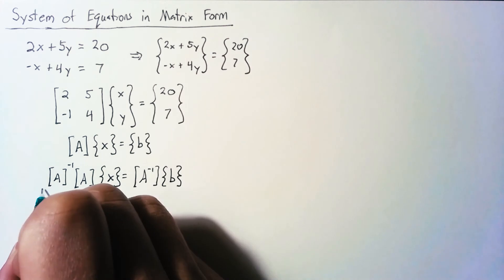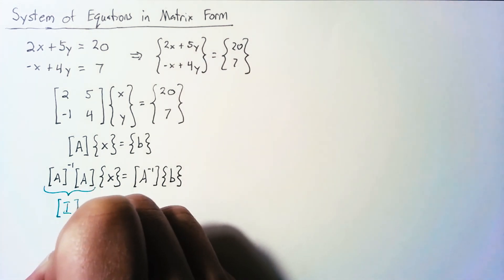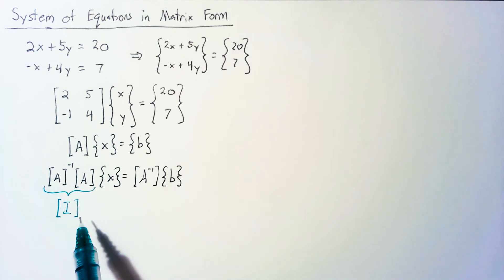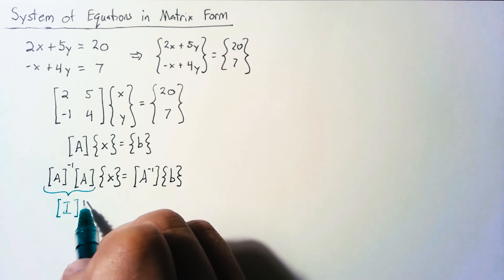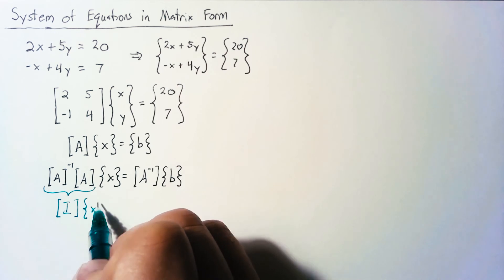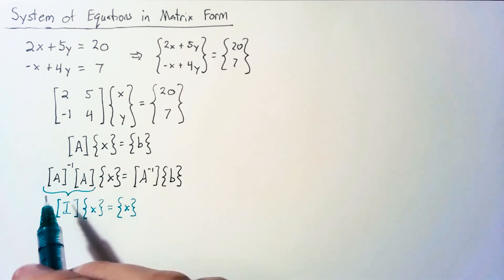So what happens here are A inverse and A together become an identity matrix. The identity matrix multiplied by x just becomes x. So I multiplied by x is simply equal to x. So the effect of pre-multiplying by the inverse of A removes that A matrix.